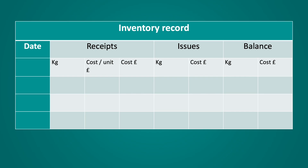With that in mind, you can see on screen now an inventory record card. This is used to show receipts of inventory, issues of inventory, and the remaining balance after a receipt or issue. In the first column we show the date of the transaction. The next three columns cover the details of receipts, the following two columns show the details of issues, and the last two columns show the remaining balance.